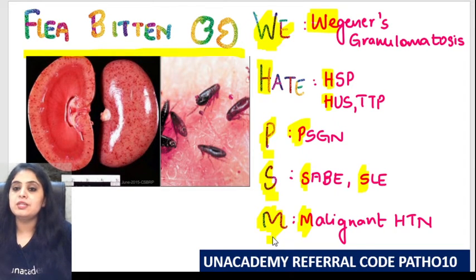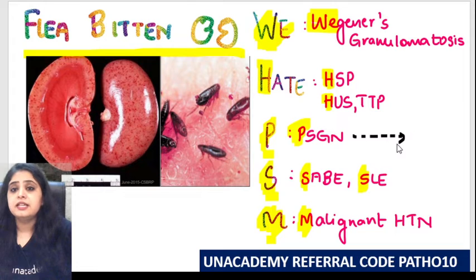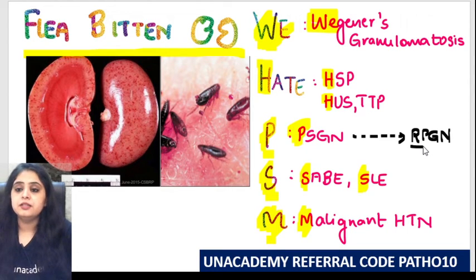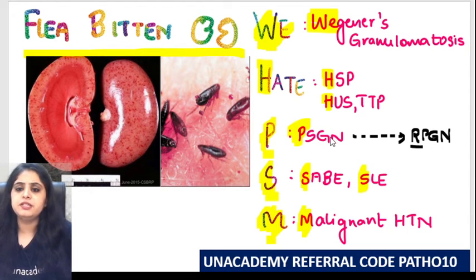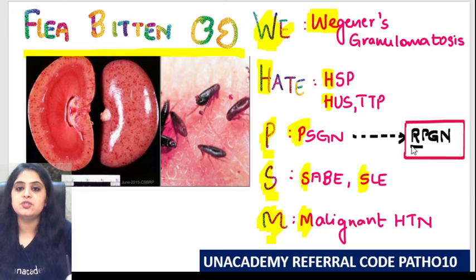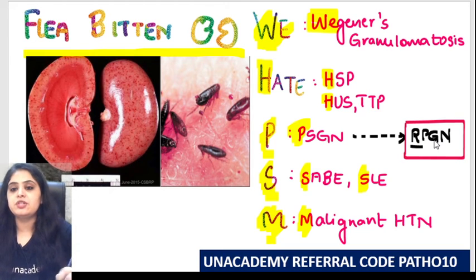The image and mnemonic won't end without homework. PSGN in very rare cases can advance and become rapidly progressing glomerulonephritis (RPGN), where the patient deteriorates very rapidly. So yes, PSGN changing to RPGN can also show you a flea bitten kidney. Your homework: PSGN shows which type of RPGN — type 1, 2, or 3? Type that in the comments below.